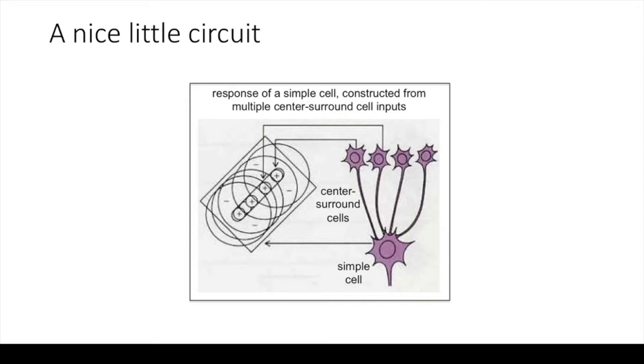Moreover, they proposed a model of how the presence of edges in simple cells is computed from the input received from center surround cells. The basic idea is that a bar is constructed out of dots, so that if a simple cell gets positive input from a group of thalamic center surround cells, which are arranged in a straight line, then the simple cell will aggregate the inputs and represent an edge.